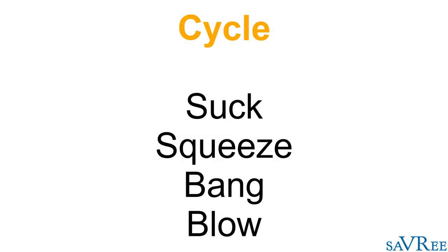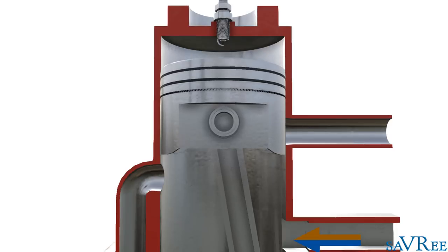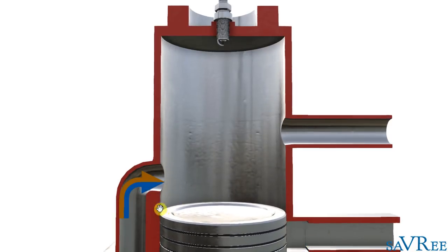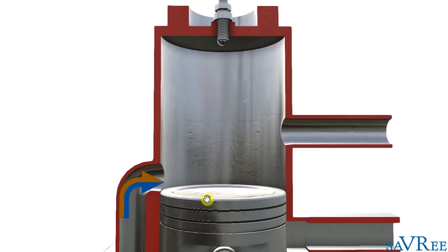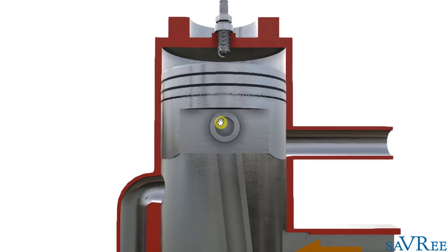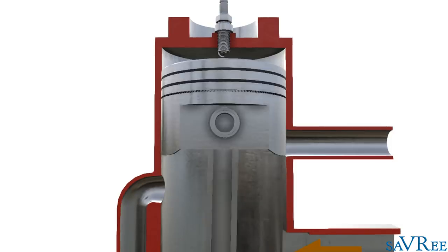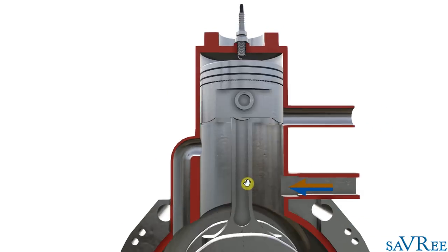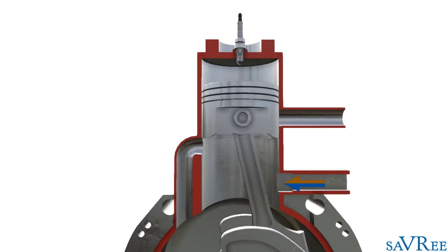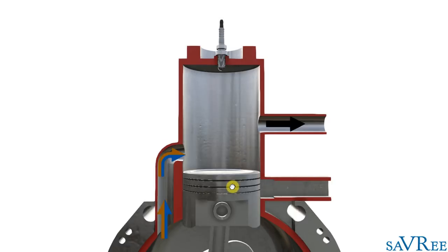So let's go through it again with the animation: squeeze, bang, blow, suck on the left-hand side, then travelling upwards — squeeze, bang, back down, blow. Let's speed it up a bit. There we go — now it's really getting going. This is essentially what is going to happen in your two-stroke engine, except it's going to be happening thousands of times a minute.